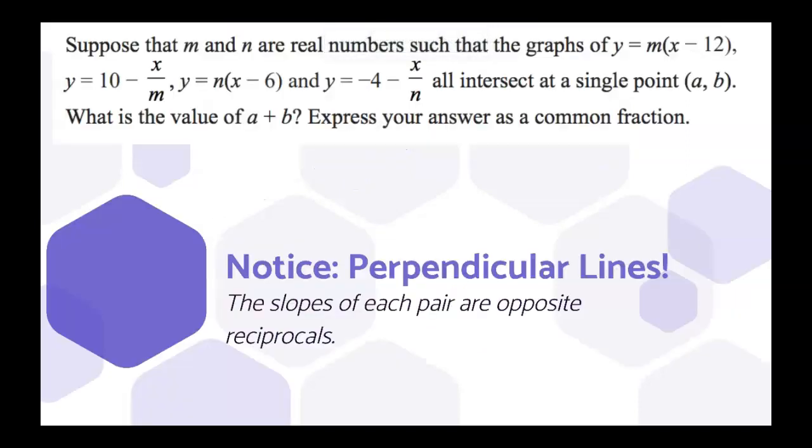The first thing you're going to want to notice about this problem is that there are pairs of perpendicular lines. The first one has a slope of m, and the second one negative 1 over m, so those are opposite reciprocals. The third equation has a slope of n, and the fourth of negative 1 over n, so those are also opposite reciprocals.